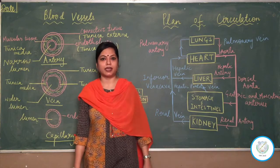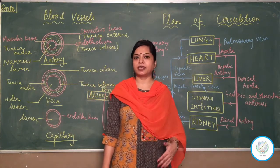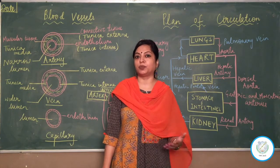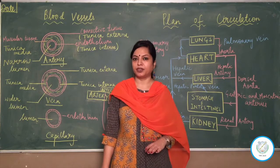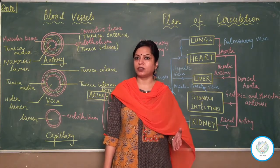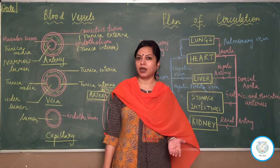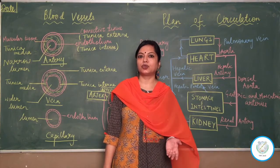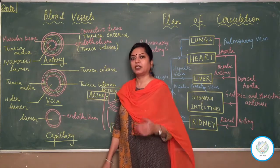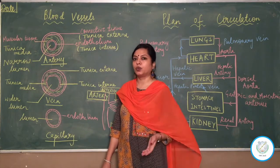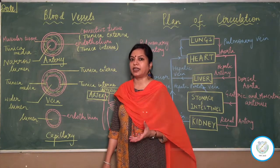Arteries are the blood vessels which carry oxygenated blood. Whenever we say some tube carries something, we need to add from where to where. So arteries carry oxygenated blood from away from the heart, towards the organ. So arteries carry oxygenated blood away from the heart towards the organ. We have spoken about what it is carrying and the direction of flow.